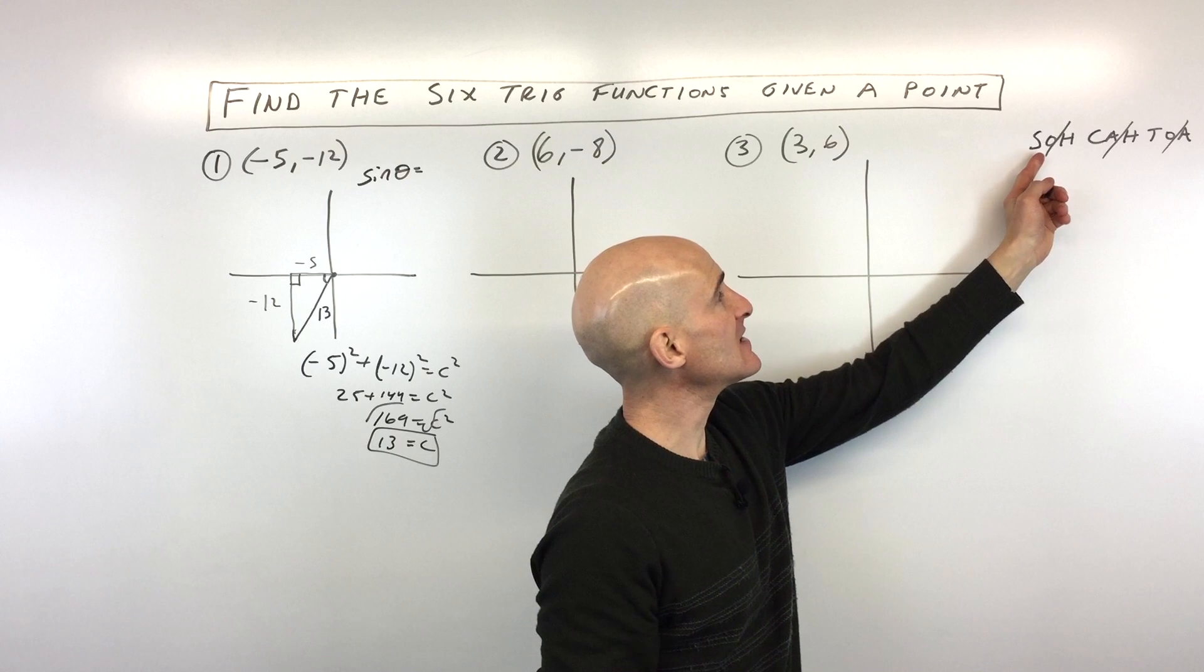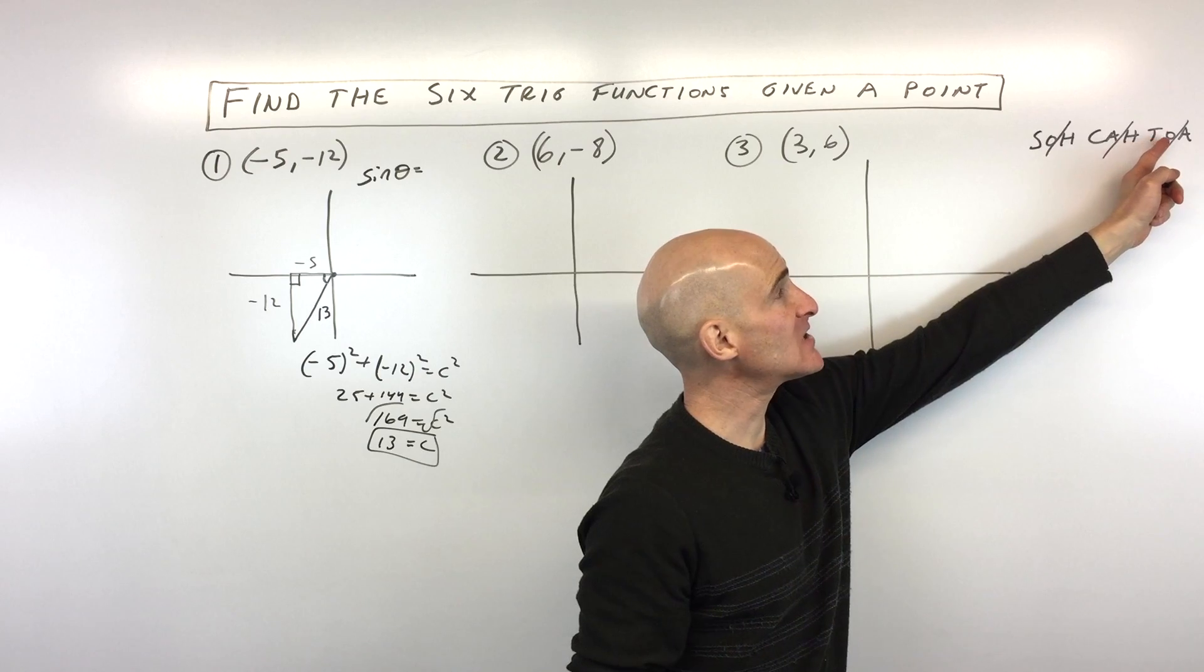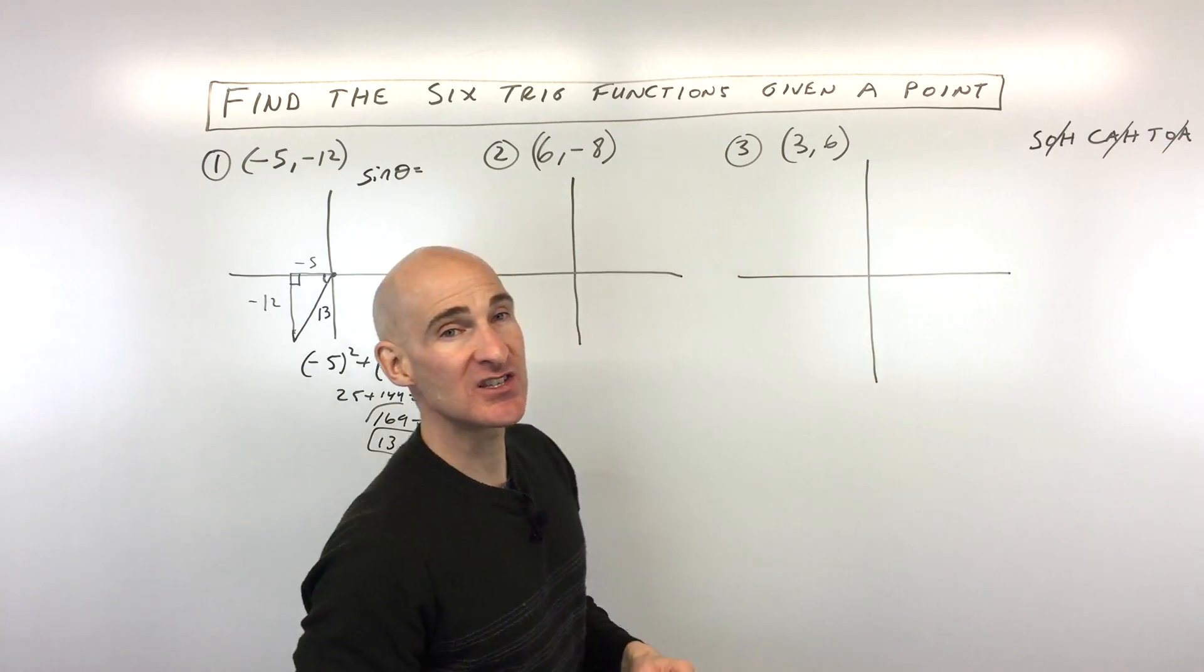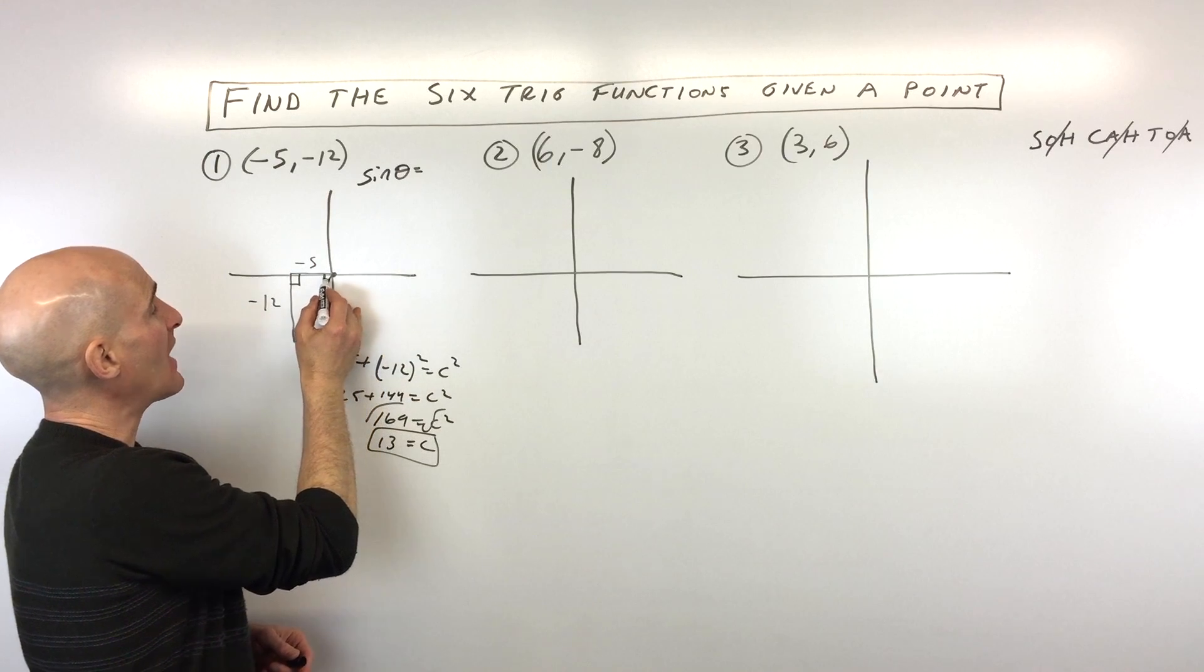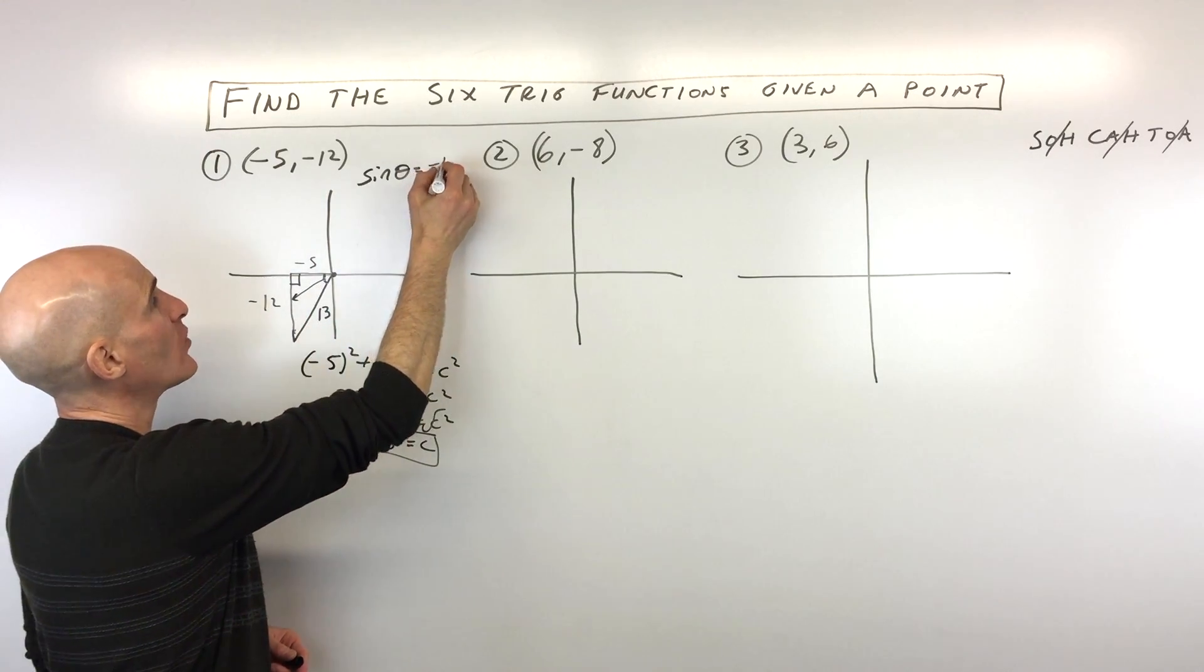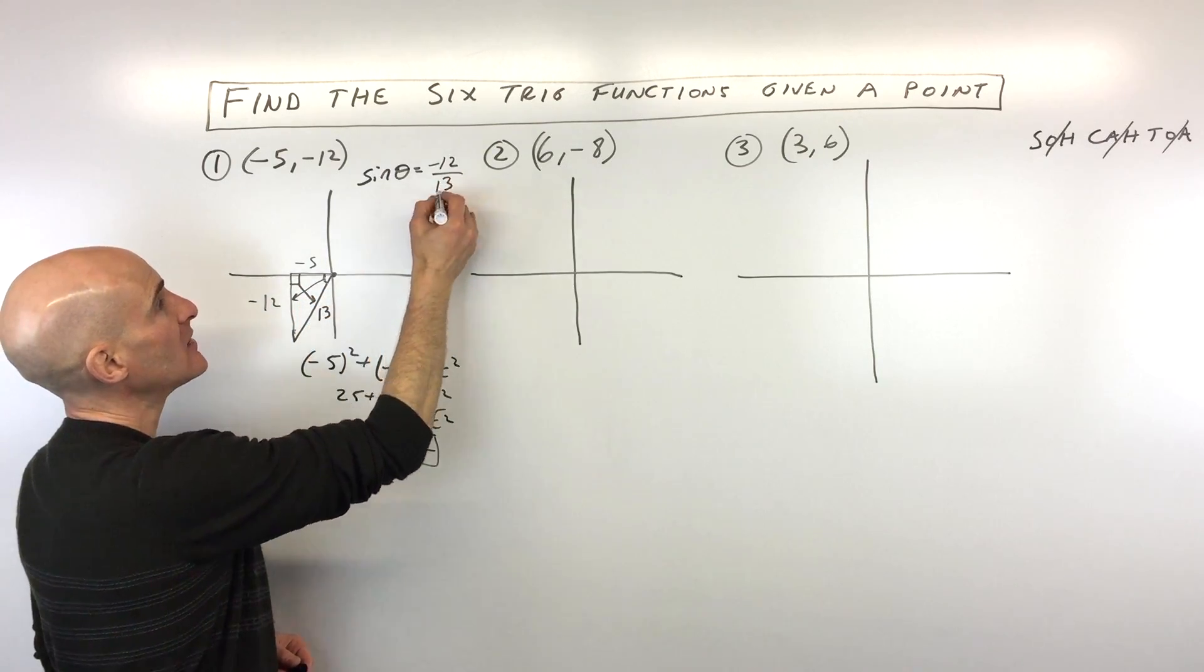We say sine is the opposite over hypotenuse, cosine is the adjacent side over the hypotenuse, and tangent is the opposite side over the adjacent side. So what we're going to do here, sine of theta is going to be the opposite, which is negative 12, over the hypotenuse, which is across from the right angle, that's 13.